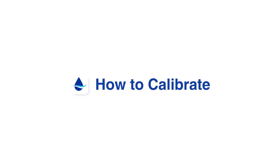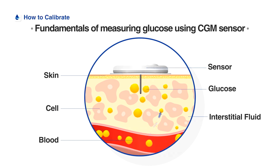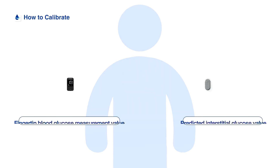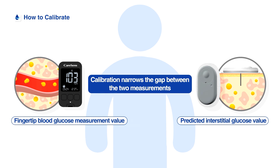How to calibrate: the continuous glucose monitoring sensor measures blood glucose by analyzing the glucose concentration in the interstitial fluid. However, there is a delay of 5 to 15 minutes compared to actual blood glucose levels. To minimize this difference, the Kerosens Air uses fingertip blood glucose measurements to calibrate the sensor's blood glucose readings. Calibration adjusts sensor readings with actual blood glucose, optimizing Kerosens Air performance.